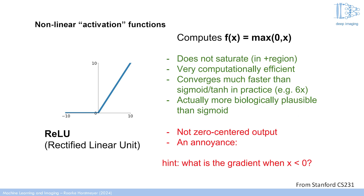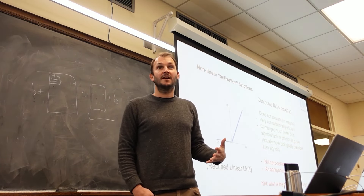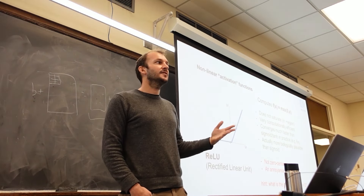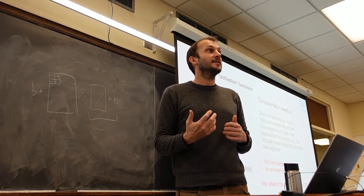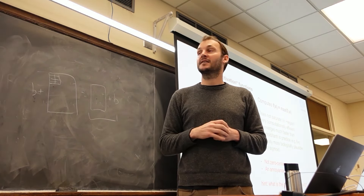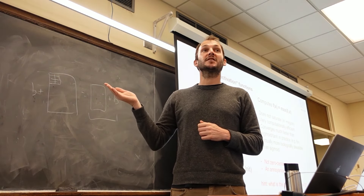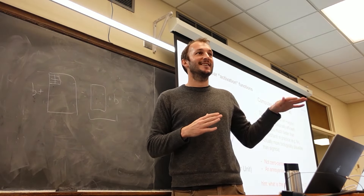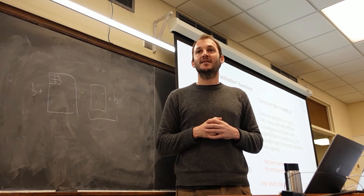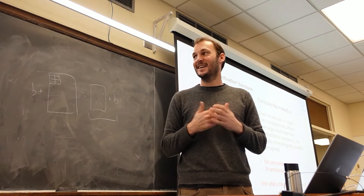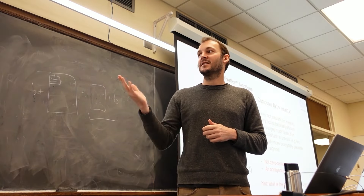The ReLU solves many of these issues but introduces new ones. It does not saturate its gradient, but only in one direction — its gradient is zero for all negative values. Any negative number coming in is set to zero. This turns out to be useful for killing certain weights that aren't helpful. For positive values, the gradient is just 1, making it efficient to compute — almost like a lookup table of size two: zero or one. It converges fast and is considered biologically plausible.